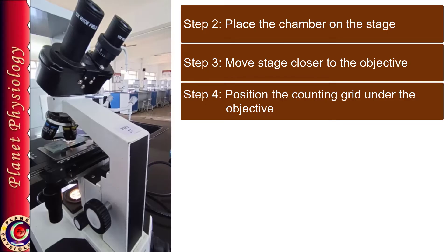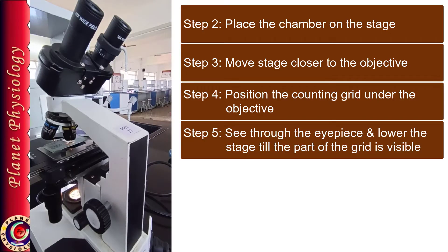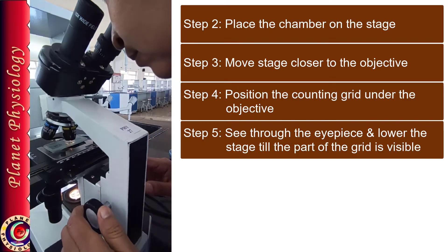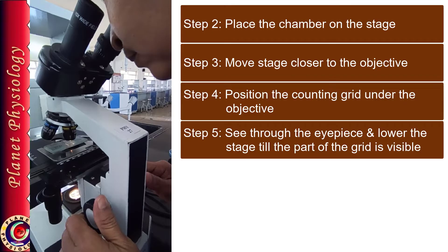Once this is done, now do not touch the mechanical screws. Now see through the eyepiece and only lower the stage with the help of coarse adjustment screws. For routine compound microscope, the body tube will move. So use coarse adjustment to move body tube up.